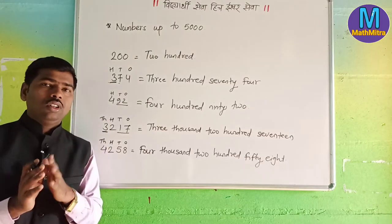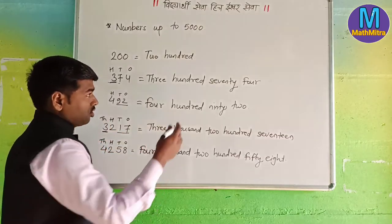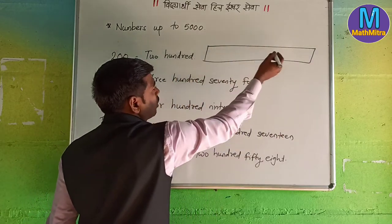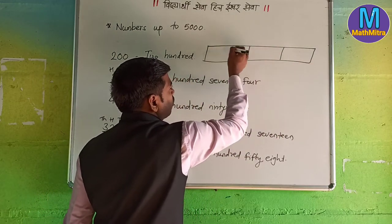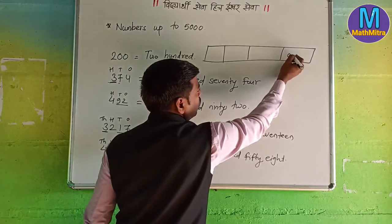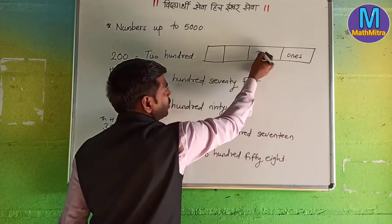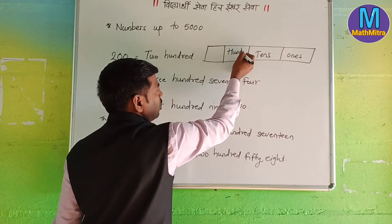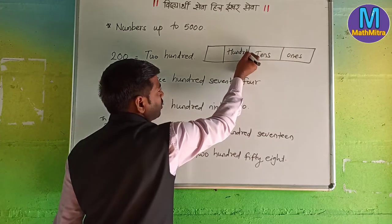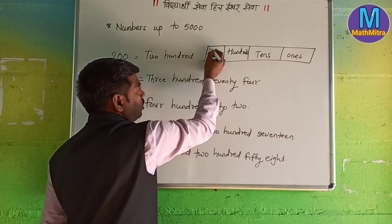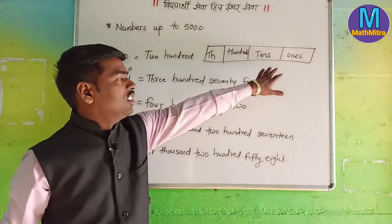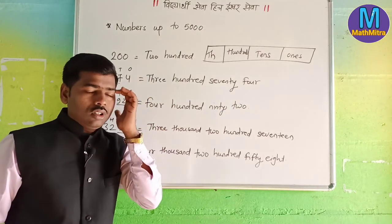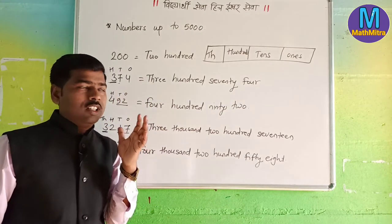Only one thing is very important when we are writing the numbers. There is a chart up to thousands. That means there are four places: first is ones, second is tens, third is hundreds, and fourth is thousands. Simply: ones, tens, hundreds, thousands. If you keep this in mind, you can write the answer for any number.